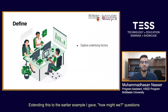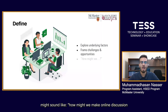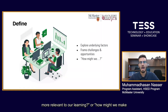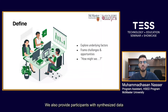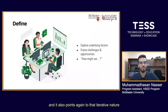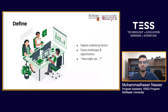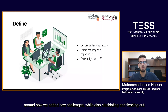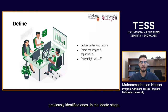Extending this to the earlier example, 'how might we' questions might sound like: how might we make online discussion more relevant to our learning, or how might we make online discussions more manageable to monitor. We also provided participants with synthesized data around online discussions from the Empathy stage, essentially to provide them with a starting point. This also points again to that iterative nature of the design thinking process — how we added new challenges while also elucidating and fleshing out previously identified ones.